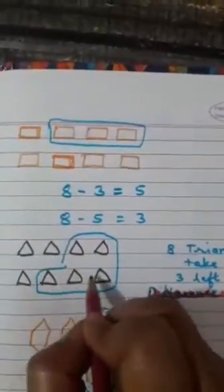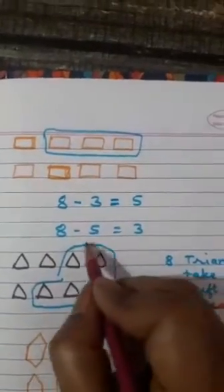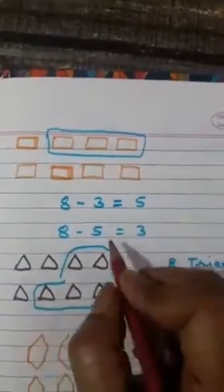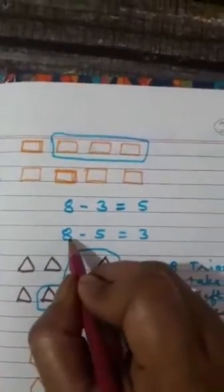There are again 8 triangles. Take away 5. How many left? 1, 2, 3. So we can write in this way: 8 minus 5 equal to 3.